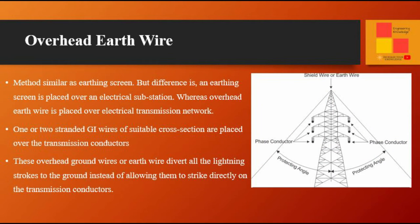Overhead earth wire is a method similar to earthing screen, but with a difference: an earthing screen is placed over an electrical substation, whereas overhead earth wire is placed over an electrical transmission network. One or two stranded GI wires of suitable cross-section are placed over the transmission conductors. These overhead ground wires divert all the lightning strokes to the ground instead of allowing them to strike directly on the transmission conductors.